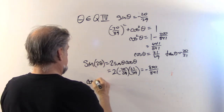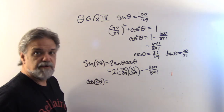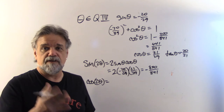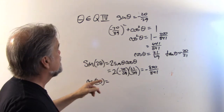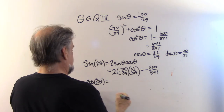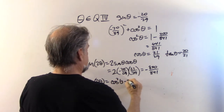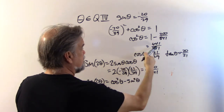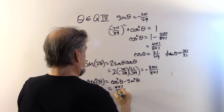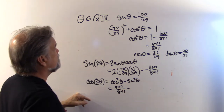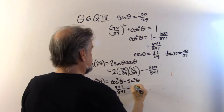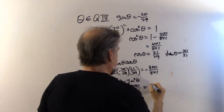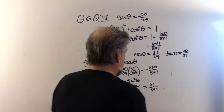The cosine of 2θ: since I have both sine and cosine, I'll use cosine squared θ minus sine squared θ. The cosine squared of θ is 441/841 (already computed), and the sine squared of θ is 400/841. So the cosine of 2θ is 41/841 — a pretty small number, which makes sense.